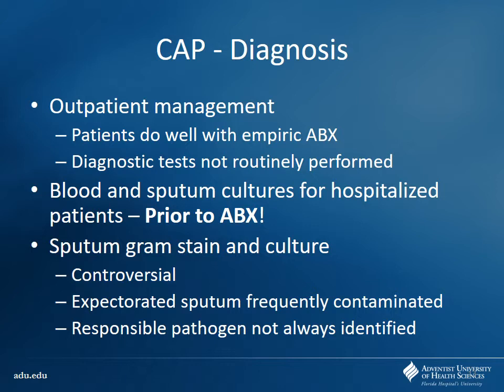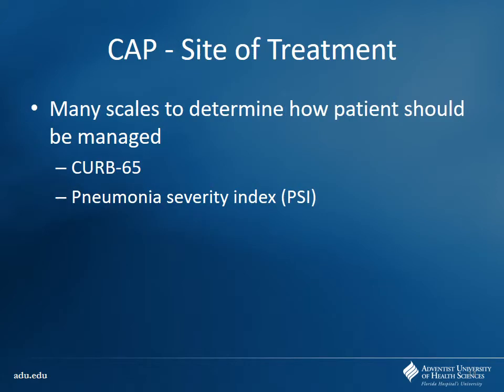Expectorated sputum is often contaminated and may not identify the responsible pathogen. When deciding between outpatient and inpatient management, scoring tools like CURB-65 or the Pneumonia Severity Index are part of your decision-making process. Does the patient need the ICU? Can they go to a med-surg floor? How intensive does their care need to be?